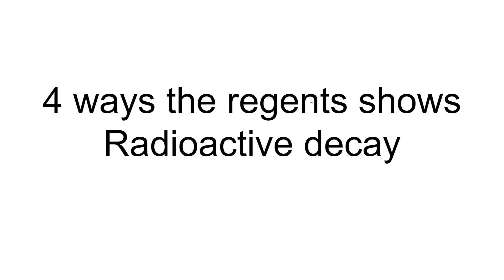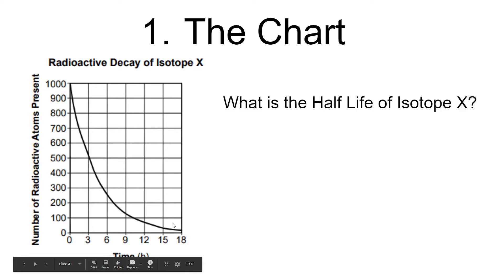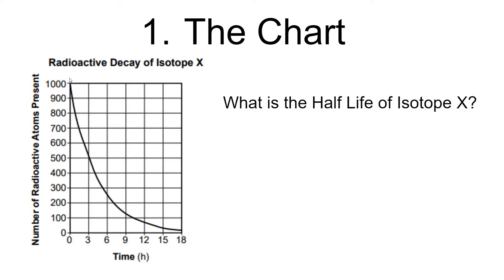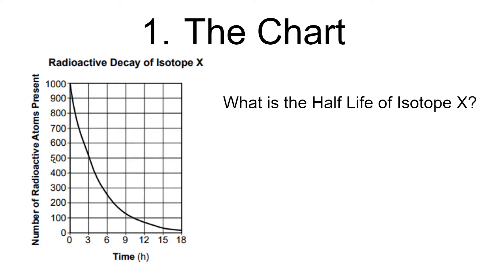There are basically four ways the Regents shows radioactive decay to you or asks the question. The first way is they'll give you a chart showing the radioactive decay of an isotope with the number of atoms present versus time. As time goes on, the shape of the curve is always going to be an exponential decay — you're starting off with a lot, and after one half-life you get half the amount.